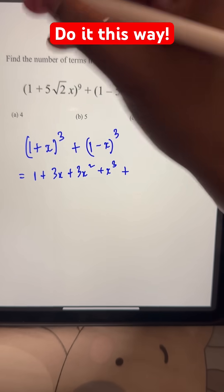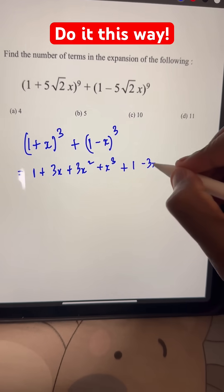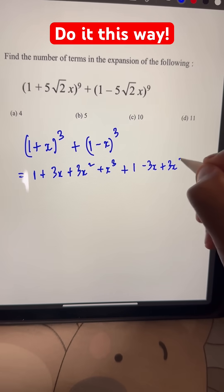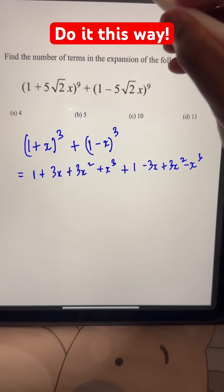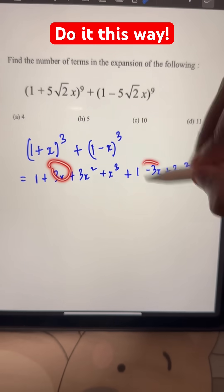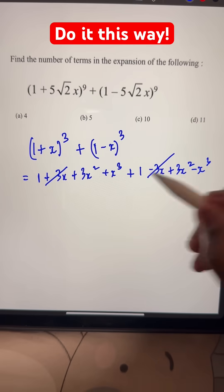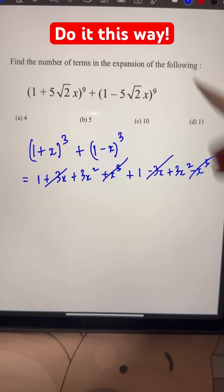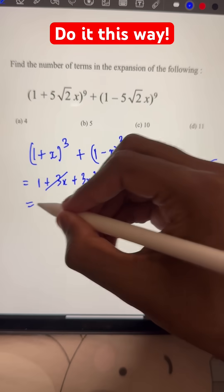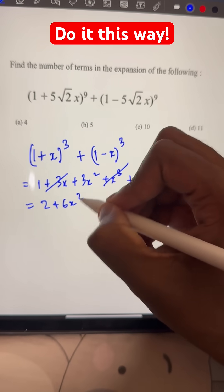And then on the right side, 1 - 3x + 3x² - x³. We can see that the 3x terms are the same with signs reversed, so they cancel. Same for the x³ terms. So what we have is 2 + 6x².